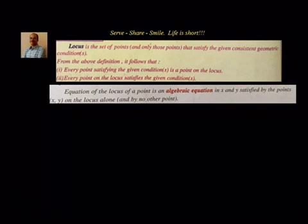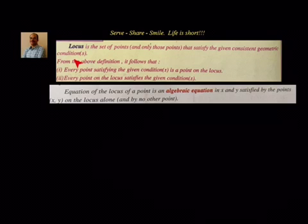Hello friends, welcome back, hearty welcome to you. Now what is locus? Locus is the collection of points, or the set of only those points, which satisfy a given consistent geometric condition. From the definition, any point on the locus should satisfy the given geometric condition, and if a point satisfies the geometric condition then it should be a point on the locus.